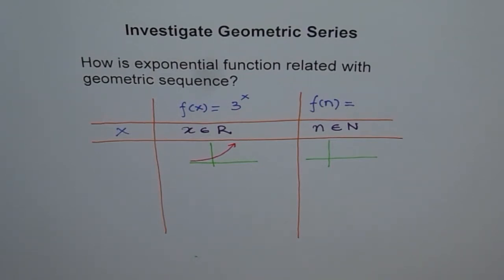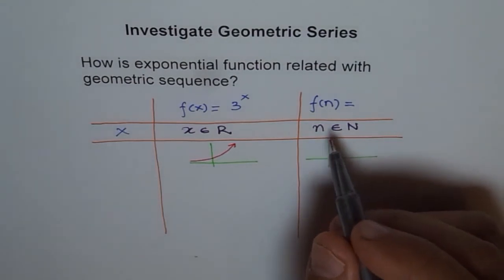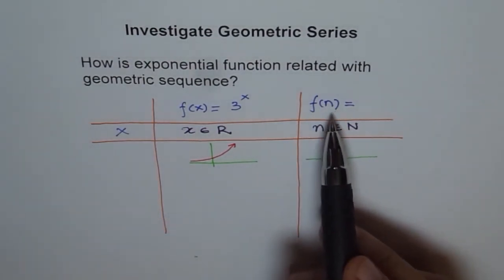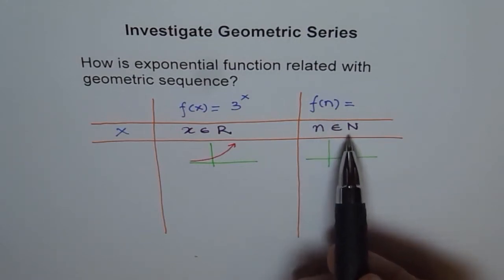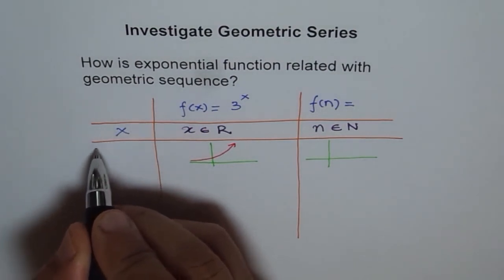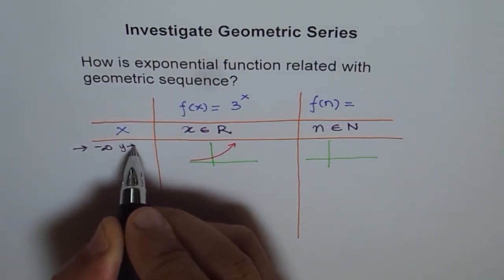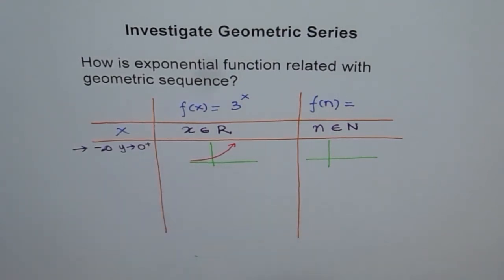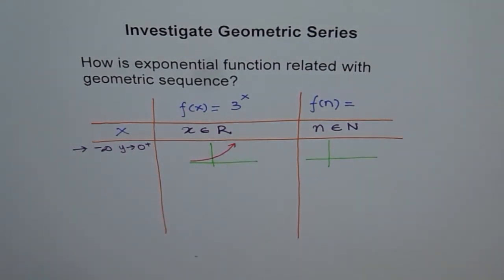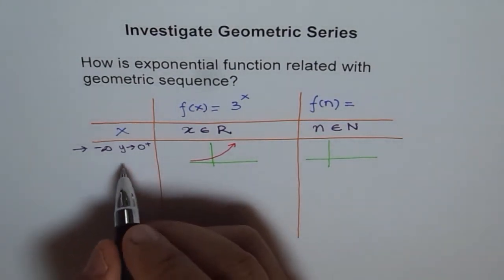Therefore, the function here, I will come back to this later. Let us go back to the x values. Since we saw that our function is only defined, geometric sequence is only defined for natural numbers, we will only consider the positive values of x. From the graph, it can go to minus infinity. If x approaches minus infinity, then y approaches 0 and that too from plus side. It is always positive.